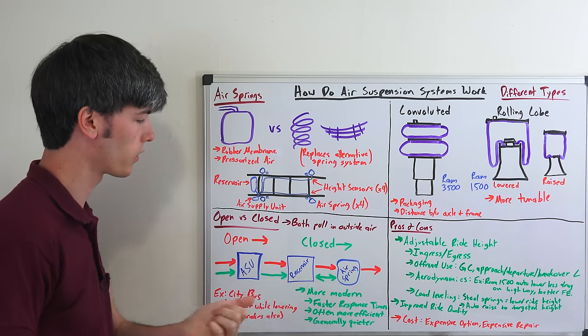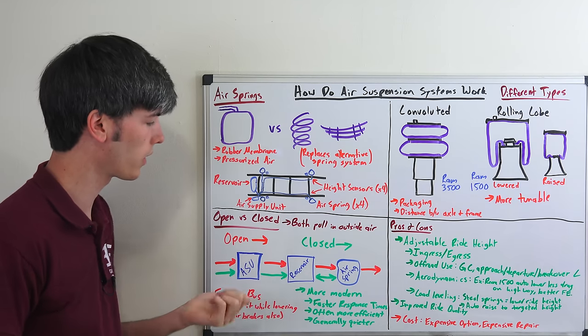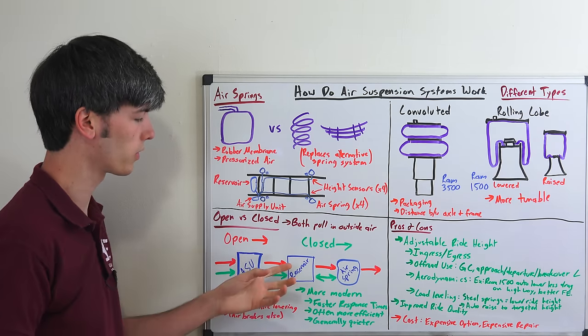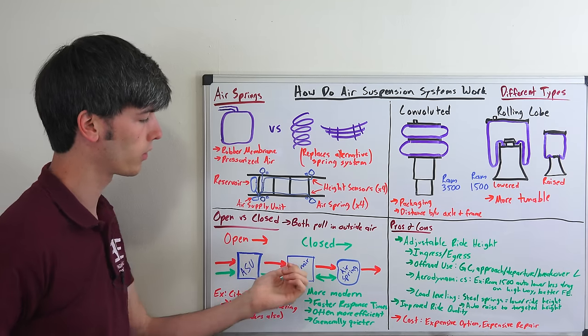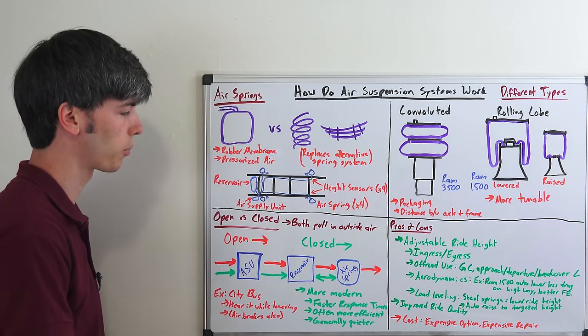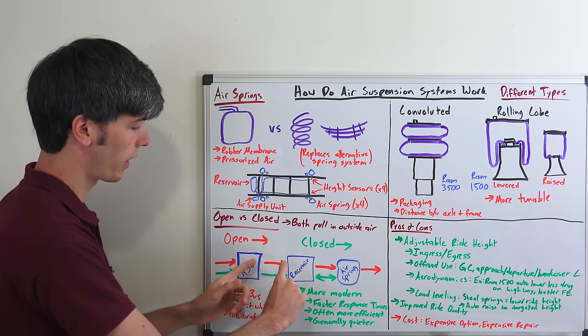You've got your air supply unit, which is going to be pulling in air, your air compressor, and sending it to the reservoir. You could have it directly send air to the air spring if you wanted, but very likely you'll be filling a reservoir and then using the air in that reservoir to supply air to the air spring whenever it's needed.